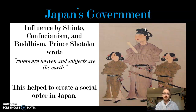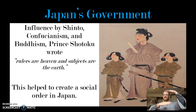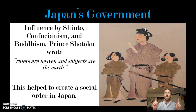Within his constitution, he has this line: 'Rulers are the heavens and subjects are the earth.' In other words, rulers are above, subjects are below. As you saw yesterday with Ms. Cherchen, this is super important to the creation of Japanese social order known as feudalism.